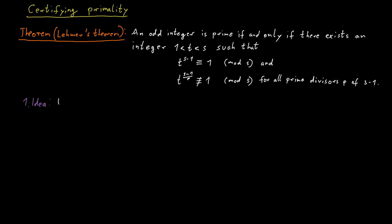It seems like providing a number t that has the properties mentioned in Lehmann's theorem would be a good candidate for a certificate. The verifier could then try to check that t indeed has the claimed properties. It would be easy for a verifier to check that t is an integer larger than 1 and smaller than s. It is also not too difficult to check that t to the power of s minus 1 is congruent to 1 modulo s.